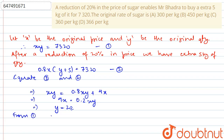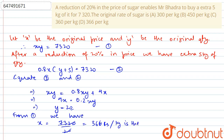From equation 1, we have X is equal to 7320 divided by 20. This gives us 366 rupees per kg as the original price of sugar.